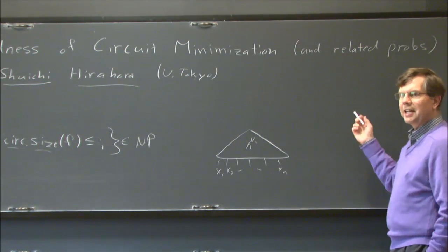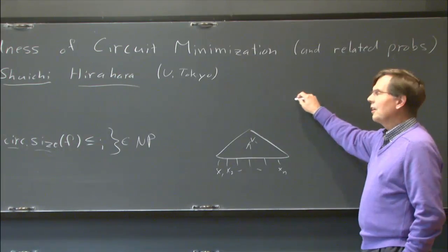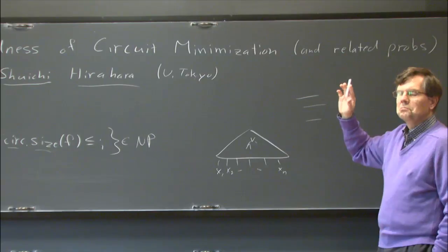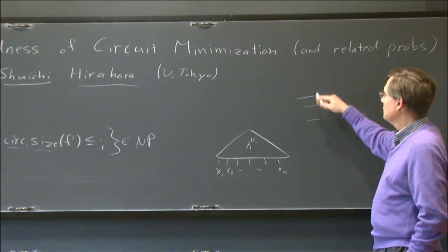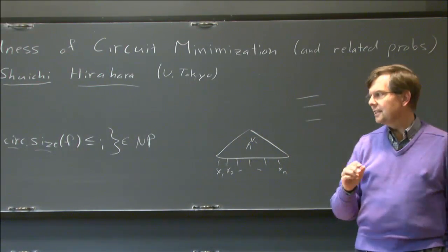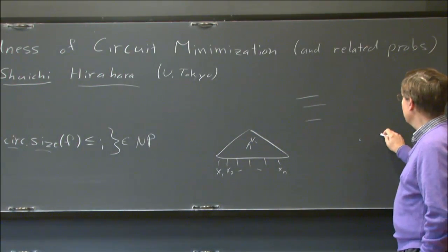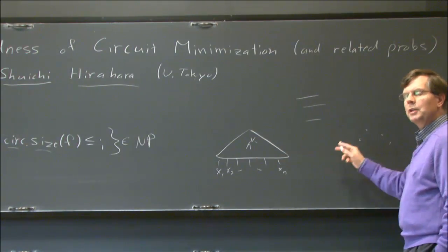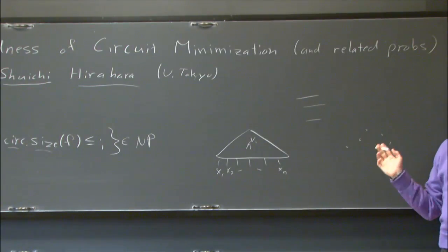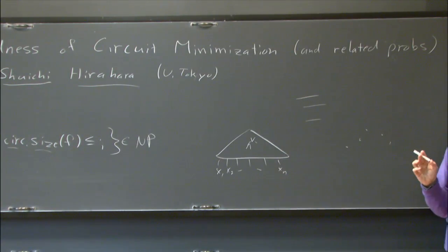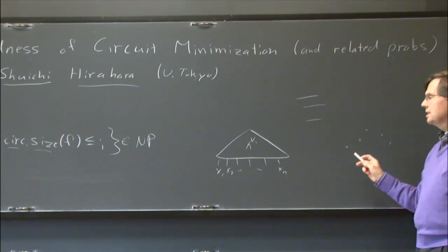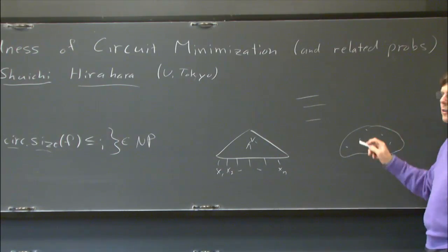Normally when we're talking about problems in NP, it doesn't make any difference. Like if you're talking about the satisfiability problem, there are lots of different presentations of that problem you could give, and they're all equivalent — you can reduce one to the other. This is a weird problem in the sense that for each one of these different measures, you get a different problem, and we don't know how to reduce any one of them to the other.